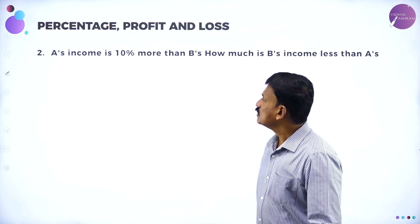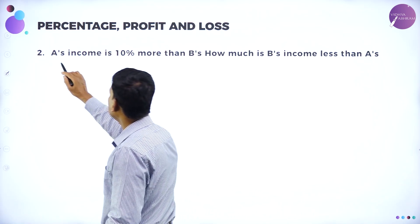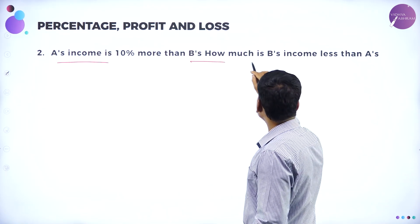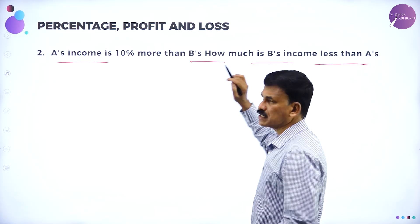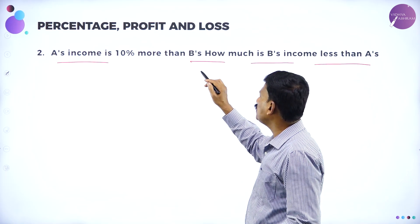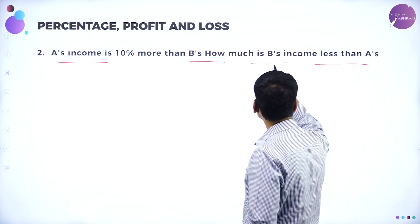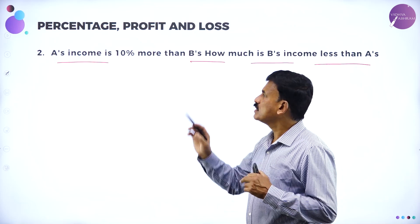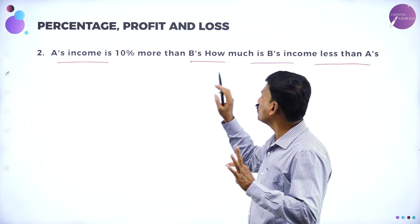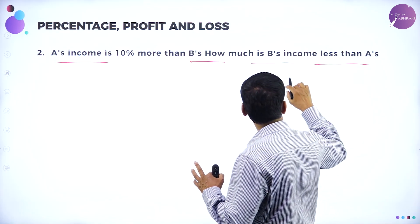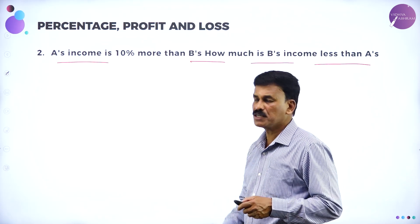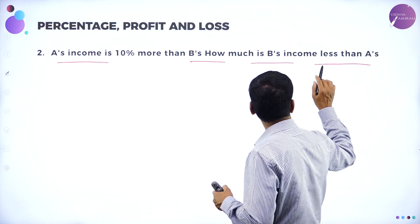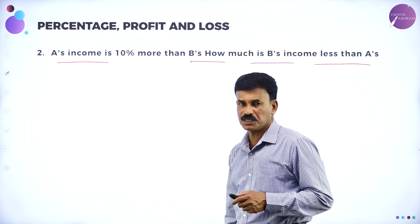Now move on to the next problem. A's income is 10 percent more than B's. How much is B's income less than A's? There are two persons A and B. The income of A is 10 percent more than B's. We have to find how much percent B's income is less than A's.